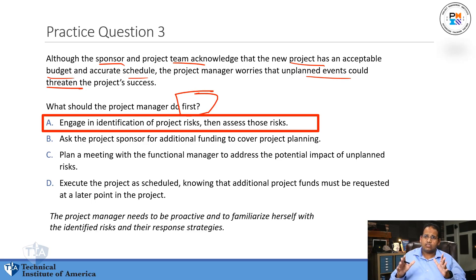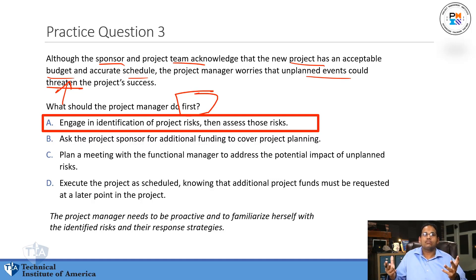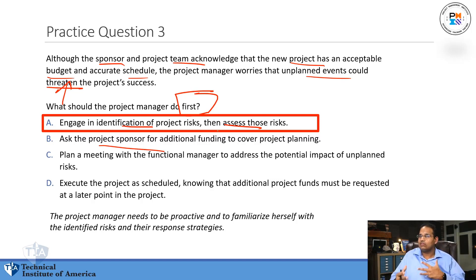The word 'threatened' is a tip here — a threat to a project is a risk, a negative risk. Remember in your study: positive risks are opportunities, negative risks are threats. So when they say an unplanned event could threaten the project, they're indirectly telling you this is some kind of risk. And what is the first thing you do when it comes to a risk? Identify those risks and then assess them.